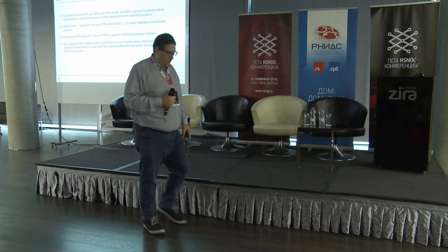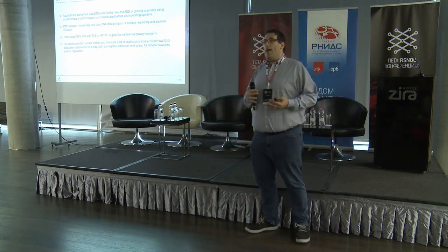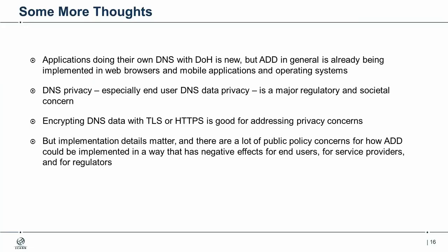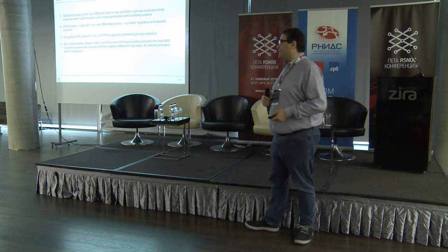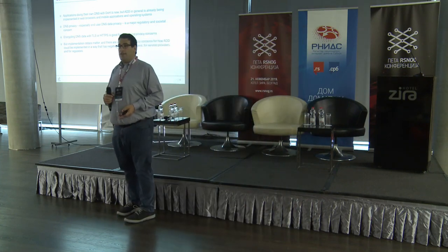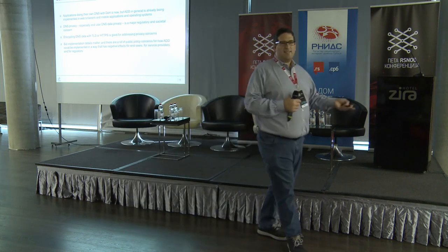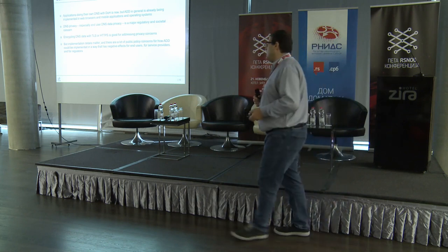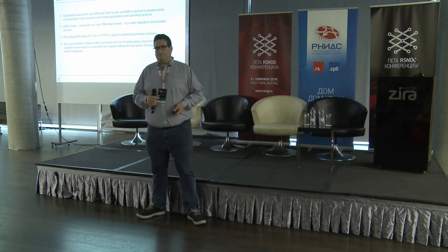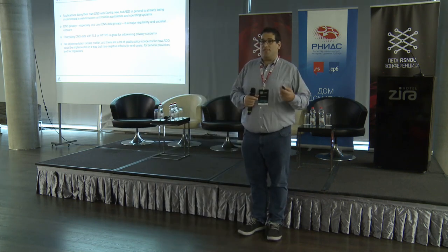Final thoughts. This thing is very new — DoH only became a protocol a year ago last month; it's 13 months old. We're learning, and one of the things we're learning is that implementation details matter. The DoH implementation Firefox announced a year ago is a whole lot different than what they announced today. DNS privacy is something we as a community decided we want — end users want it, and regulators have decided they want it. So encrypting DNS data with TLS, encrypting it in HTTPS, moving to new things like DNS over QUIC — these are all good for society and good for the internet. But how you do it matters. That's applications doing their own DNS — DoT and DoH.